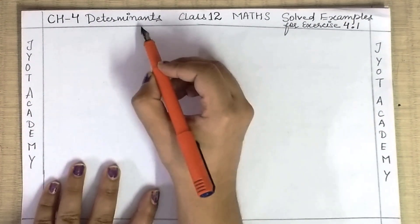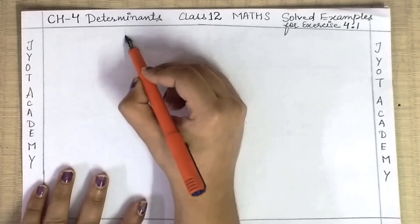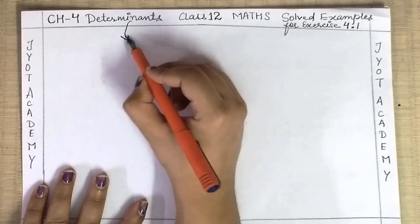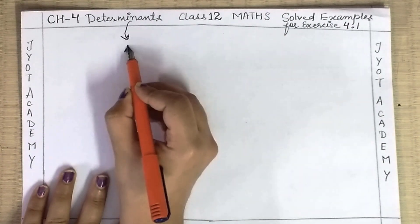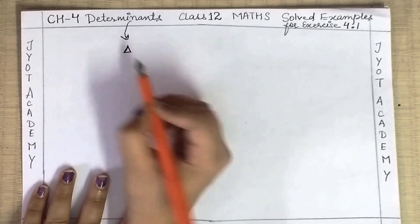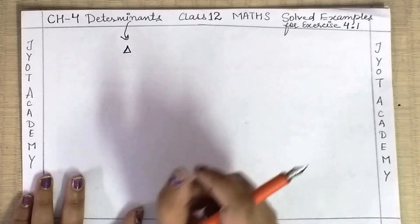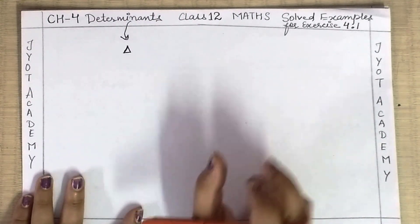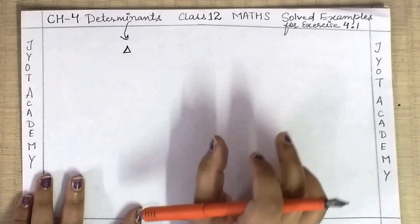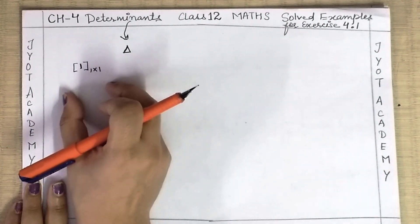First of all, a determinant has a sign — if you have checked your book, there is a small triangle shape used for it. Determinants are found based on the order of the matrix. For example, here I have taken an example with one element, one row and one column, which is a 1×1 order matrix.